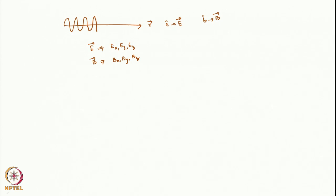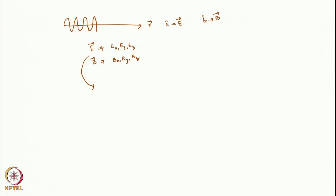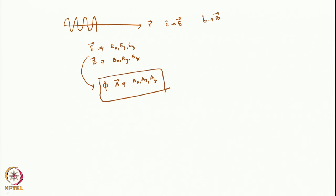In the Hamiltonian, we have potential and not the field, so we need to convert fields into potentials. There is a transformation that takes the electric and magnetic fields to scalar and vector potentials. Phi is the scalar potential, and the vector potential A has three components AX, AY, and AZ — giving four components total: one scalar and three vector potentials.